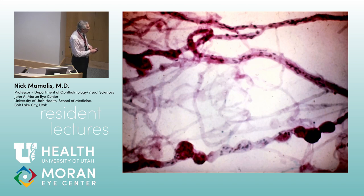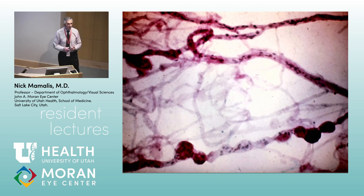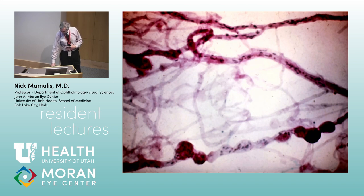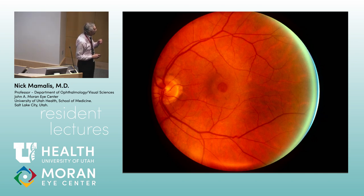In sickle cell, when cells sickle they clump in vessels, causing focal ischemia — the knobbiness of vessels shows that. You don't see much sickle cell in Utah since the population is predominantly Caucasian, but in areas with a high African-American population you see a lot. Looking at the next image: in the macula there's a full-thickness macular hole with some surrounding edema.